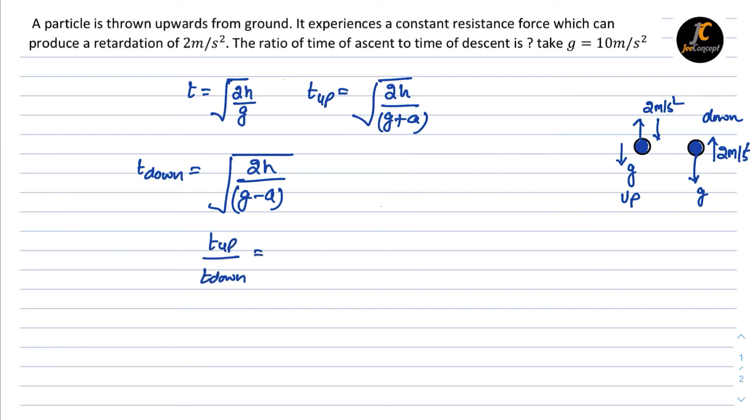This will become √[(2h)/(g+a)] × √[(g-a)/(2h)]. The 2h will cancel out. If we substitute the values of g and a, this becomes √[(10-2)/(10+2)] = √(8/12) = √(2/3). So this is the solution to this problem.